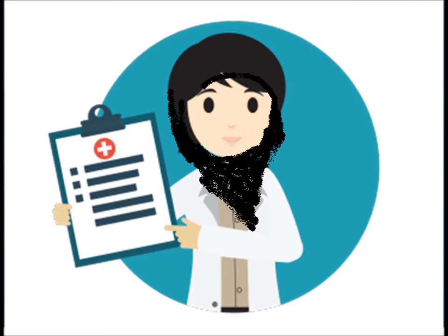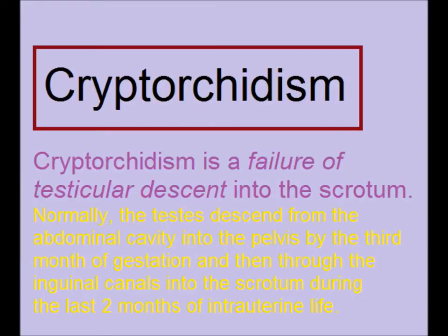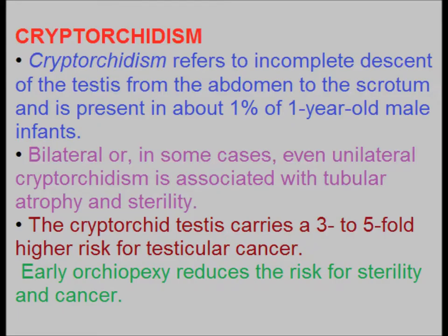In cryptorchidism, parents may feel absence of the testes in the scrotum in a child, or it may present in an adult with a history of infertility. Cryptorchidism is a failure of testicular descent into the scrotum. About 1% of one-year-old male infants may present with incomplete descent. It may be bilateral or unilateral. There is a 3 to 5-fold increased risk of testicular cancer, and early orchiopexy reduces the risk for sterility and cancer.